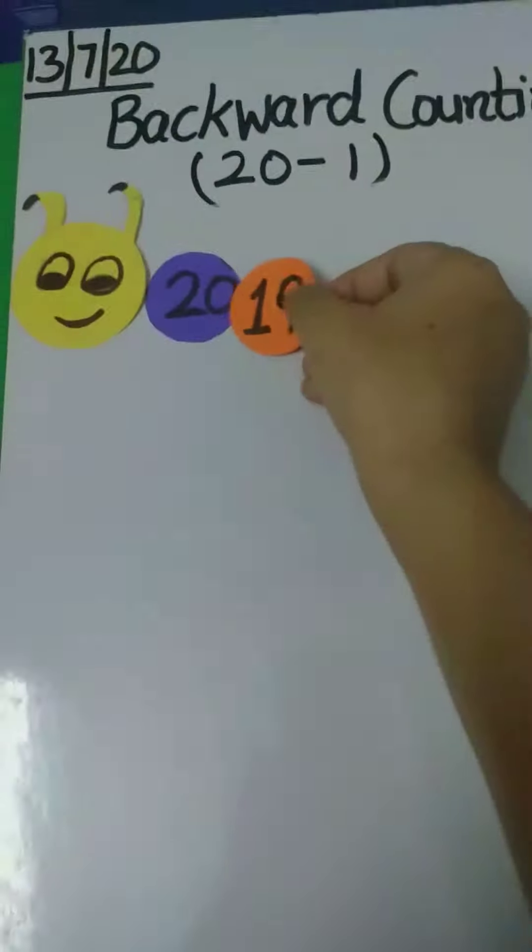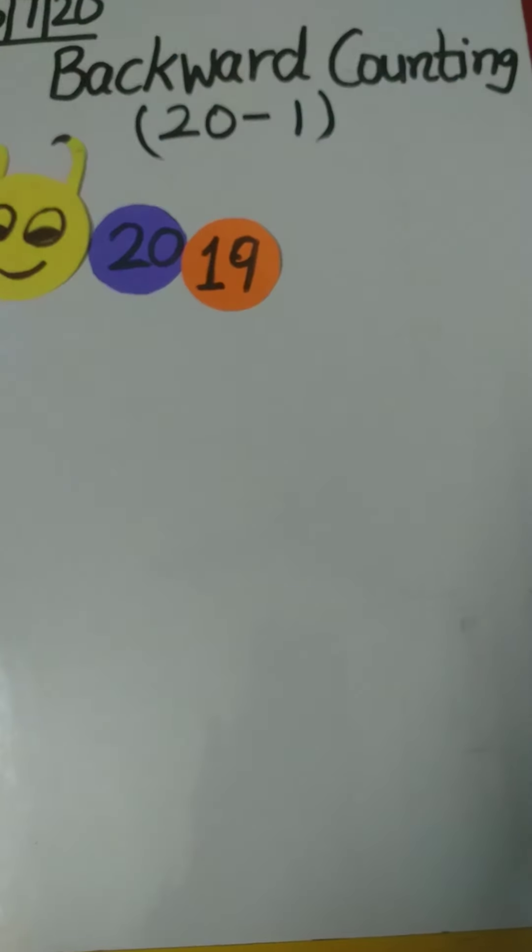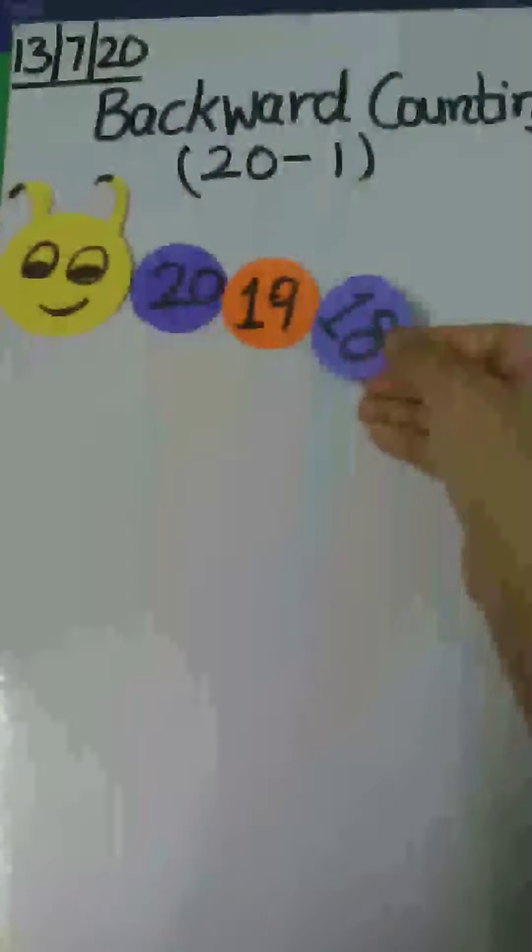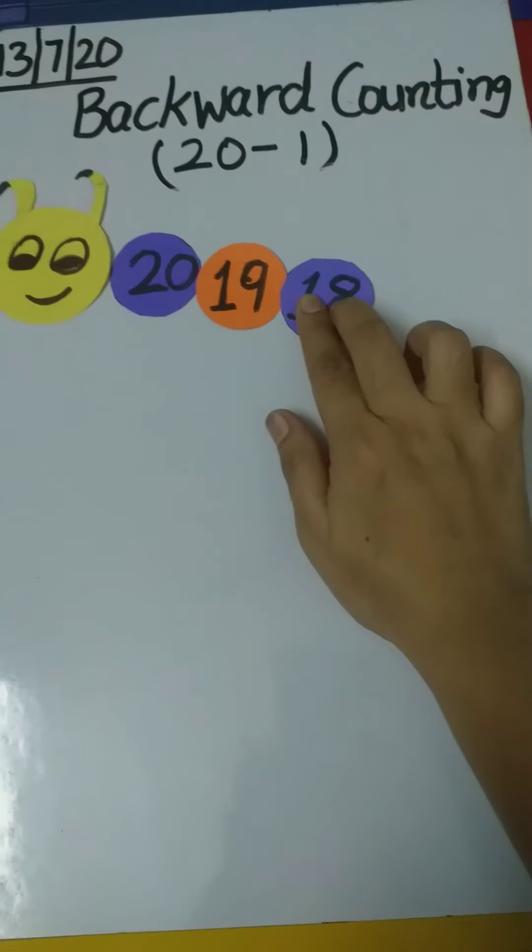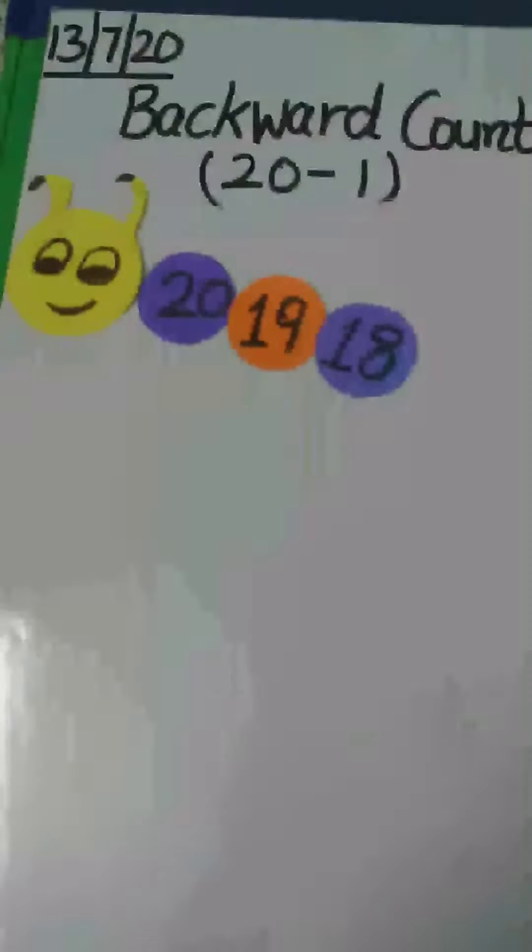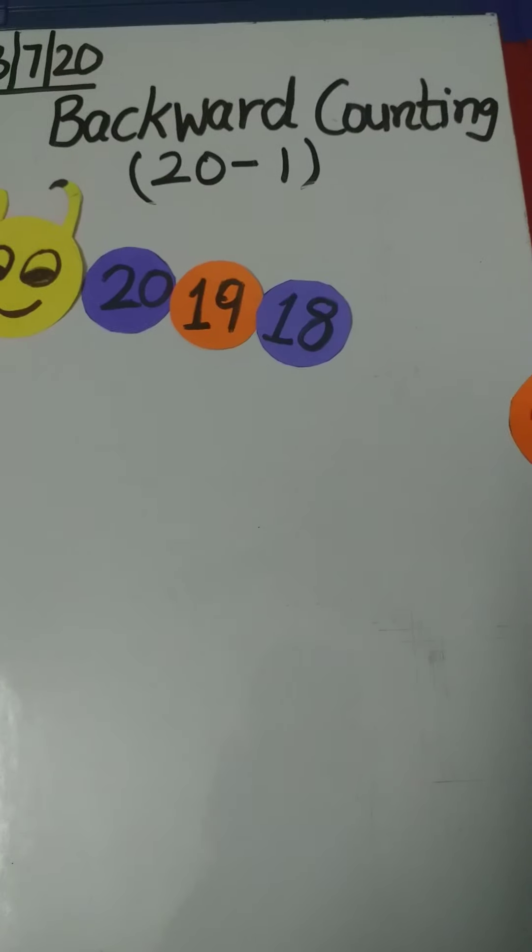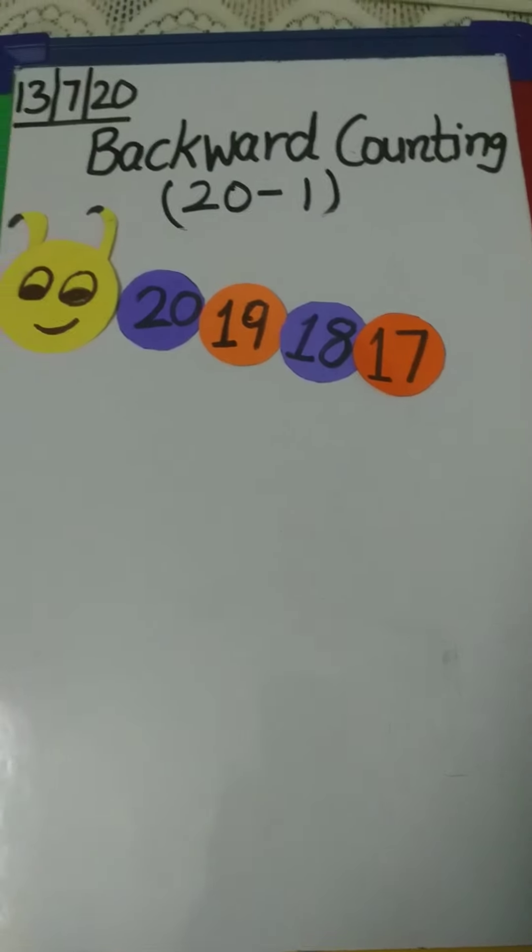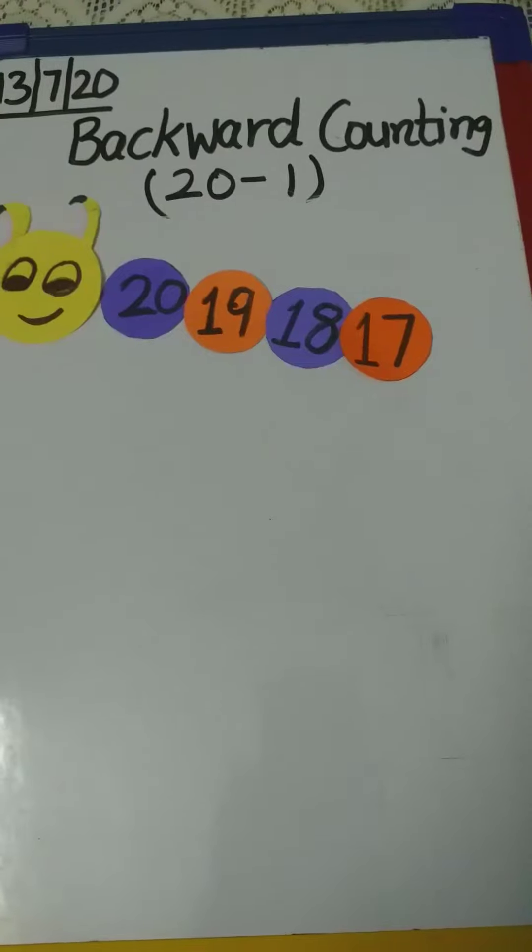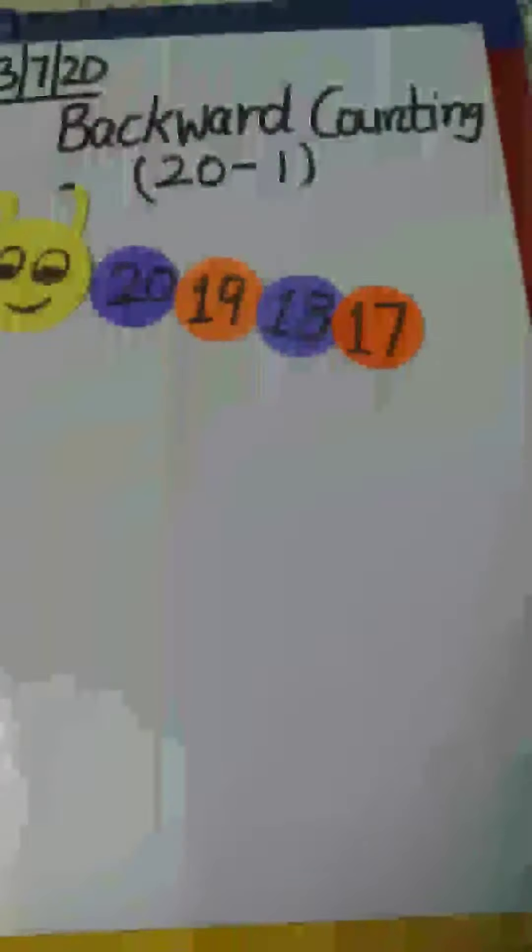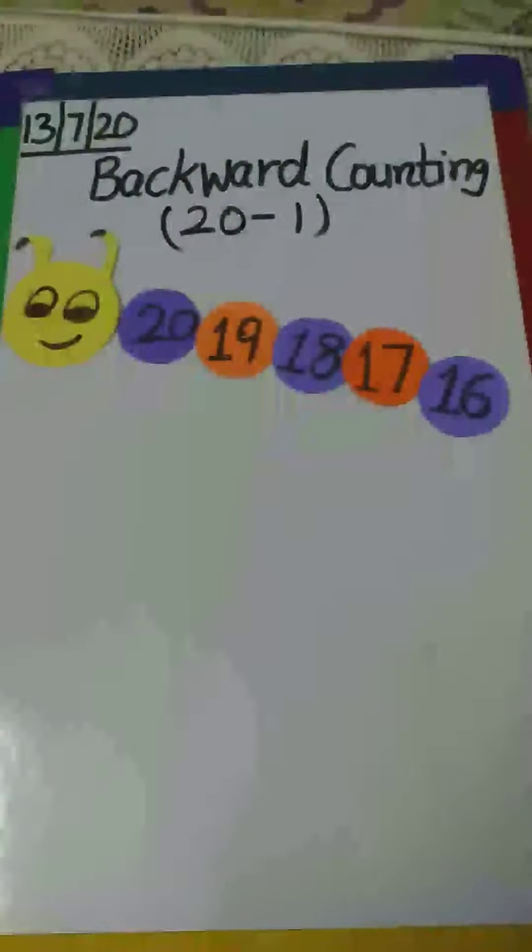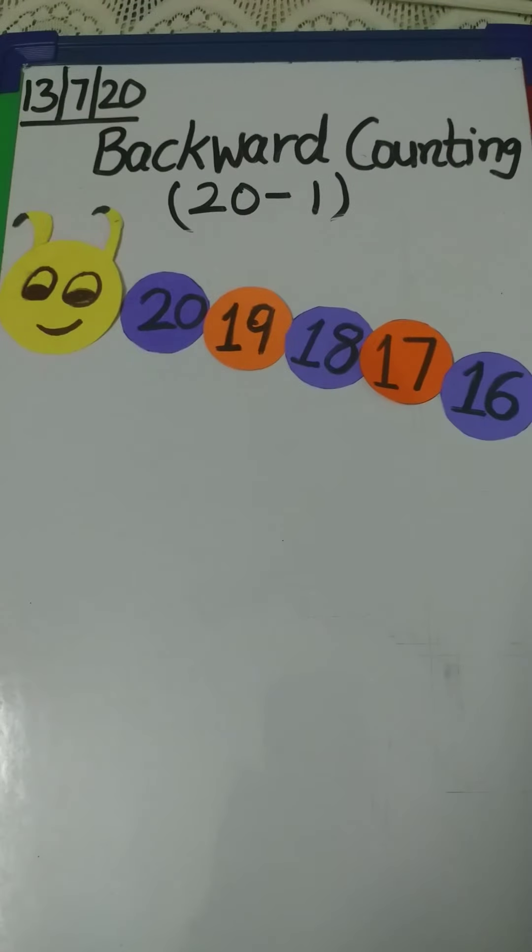So now tell me, what comes before number 20? Yes, 19. And what comes before number 19? 18. And what comes before number 18? 17. Then what comes before number 17? Yes, 16. And what comes before 16? Yes, 15.